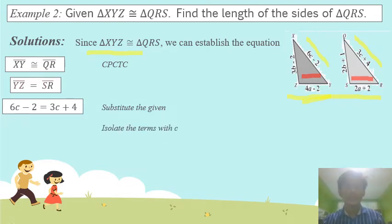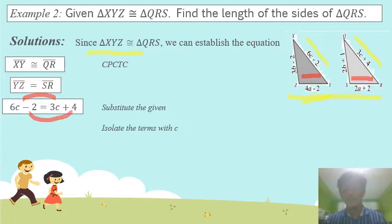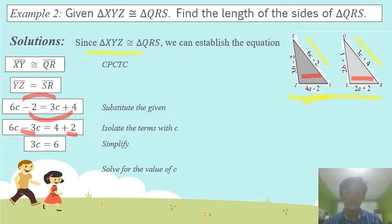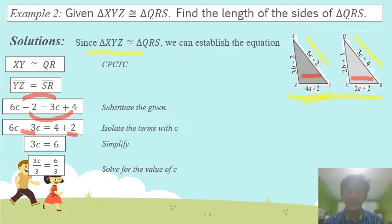We need to isolate the terms with C. Transpose 3C to the left side and negative 2 to the right side. Positive 3C becomes negative 3C, and negative 2 becomes positive 2. Simplifying: 6C minus 3C gives 3C, and 4 plus 2 gives 6. Divide both sides by 3 so that C will remain. Therefore, C is equal to 2.